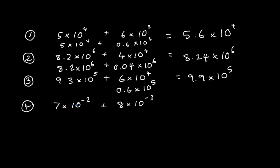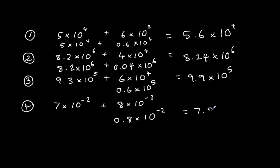Here we've got 7 times 10 to the power of minus 2, and 8 times 10 to the power of minus 3. I need to add one onto the power of the second term, so I change it to 0.8 times 10 to the power of minus 2. So 7 plus 0.8 gives me 7.8 times 10 to the power of minus 2.